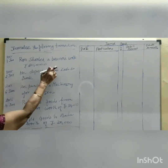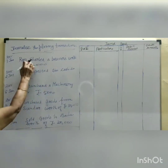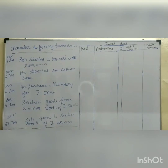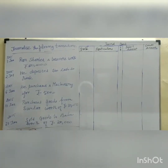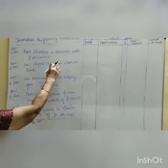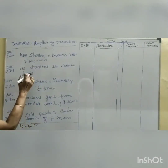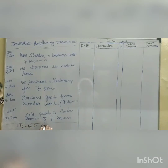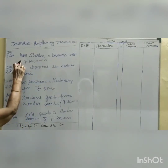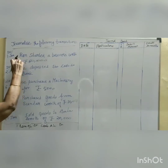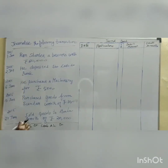Rahm started a business with rupees 50,000, so Rahm is a capital account. Under the modern approach, Rahm's account should be credited. The cash received is an asset, so the cash account should be debited. Rahm comes under the capital account because Rahm is the owner of the business.